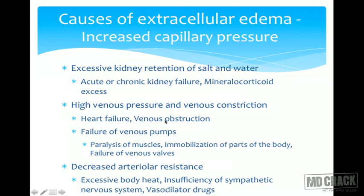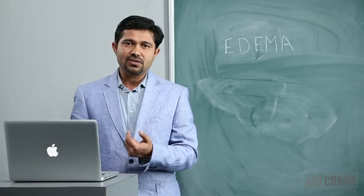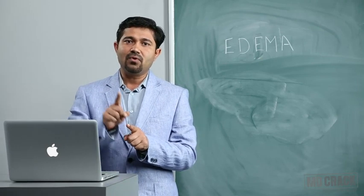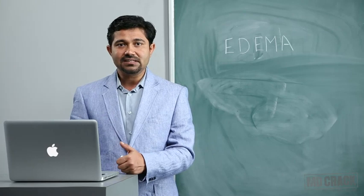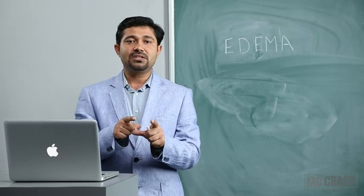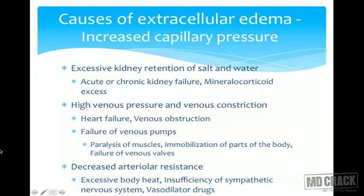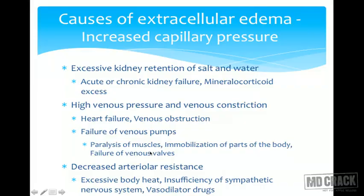High venous pressure and venous constriction increase hydrostatic pressure at the venous end of the capillary, causing less absorption and edema. This can happen in heart failure, venous obstruction due to embolus, and failure of the venous pump — commonly seen in varicose veins where valves are damaged. Without proper valves, blood accumulates in dependent veins of the legs, increasing hydrostatic pressure at the venous end.